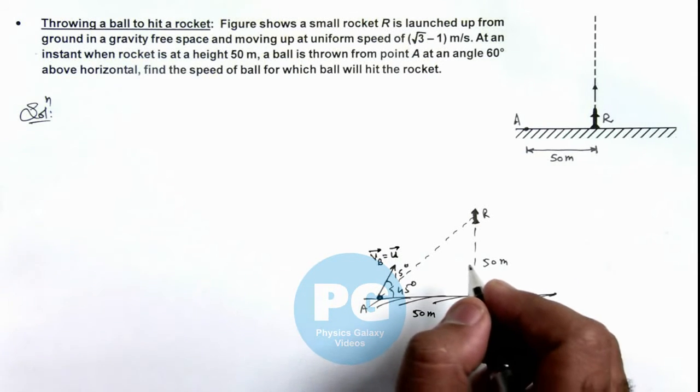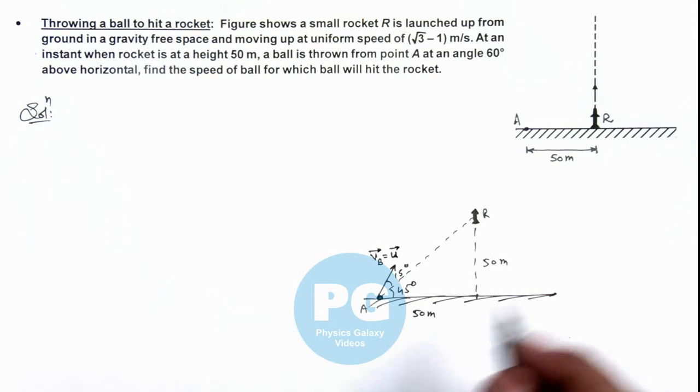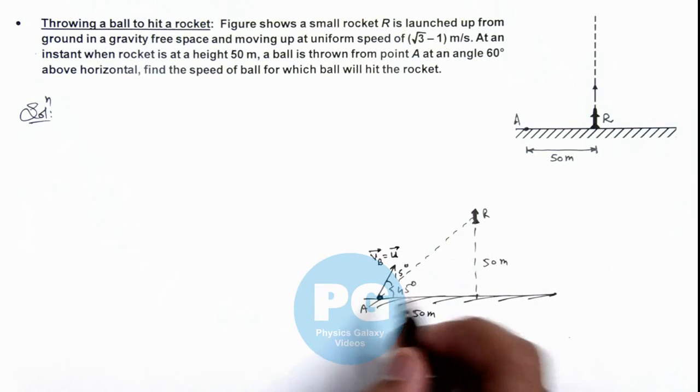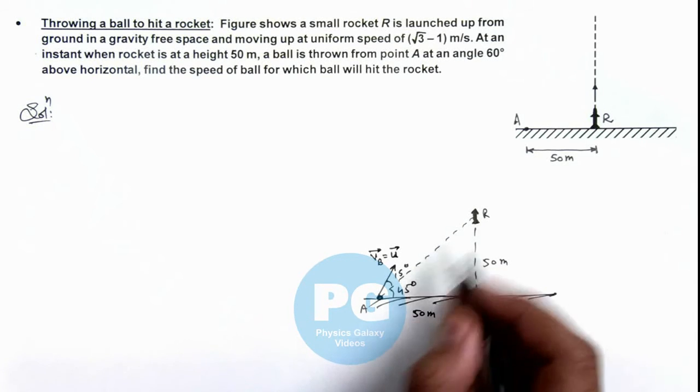Now in this situation, we can use the relative velocity concept that if the ball has to hit the rocket, its velocity with respect to the rocket must be along the line joining point A and R.